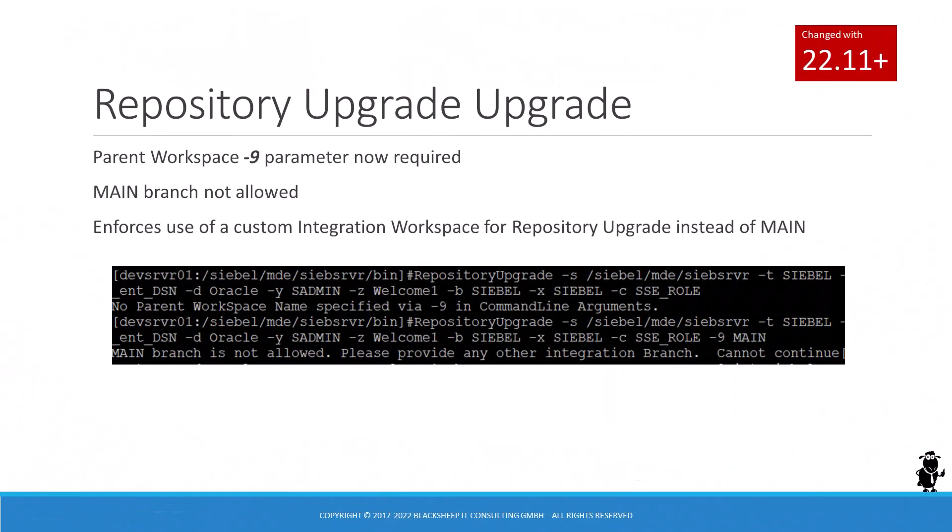When running an update from a prior release of IP17 and higher to the latest release, customers have the option to run the repository upgrade utility. This optional step in the update process imports schema changes, repository object definitions, and seed data to support non-mandatory features. In the past, the utility did not enforce setting a parent integration workspace to import the repository portion. The default parent was also main, resulting in a branch right below the main branch, which could lead to difficult situations for testing and merging the changes applied by the repository upgrade.